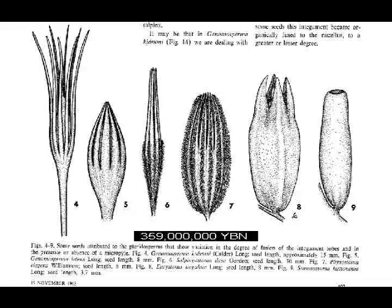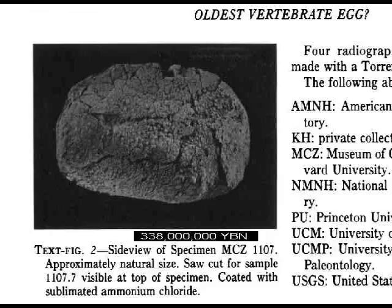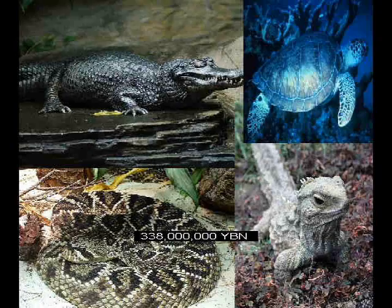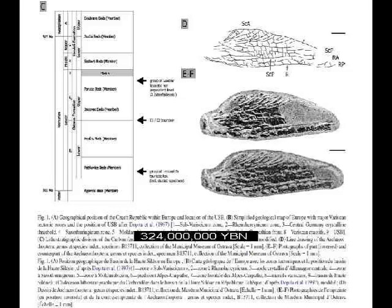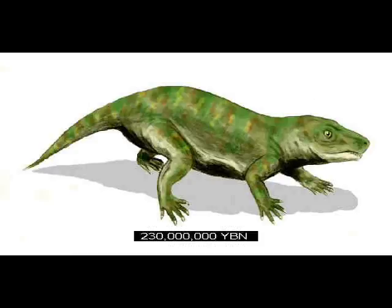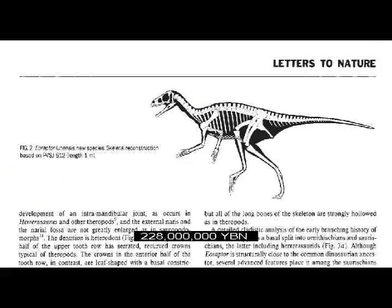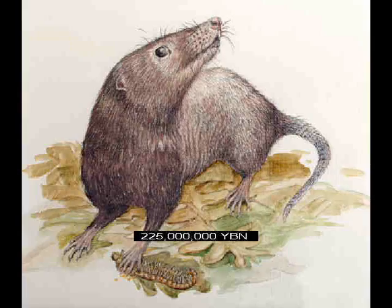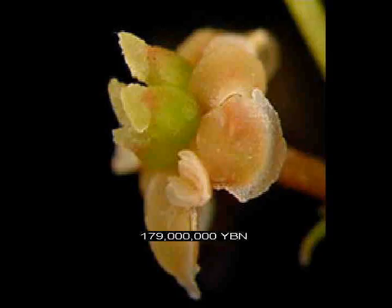Amphibians. First seed. Hard shell egg. The amniota — ancestor of reptiles, mammals, and birds. Reptiles. First flying animal, an arthropod. Warm-blooded, hair-growing organism. Dinosaurs. Mammals. First nipple and breast. First flying vertebrate — pterosaur. First flowering plant.